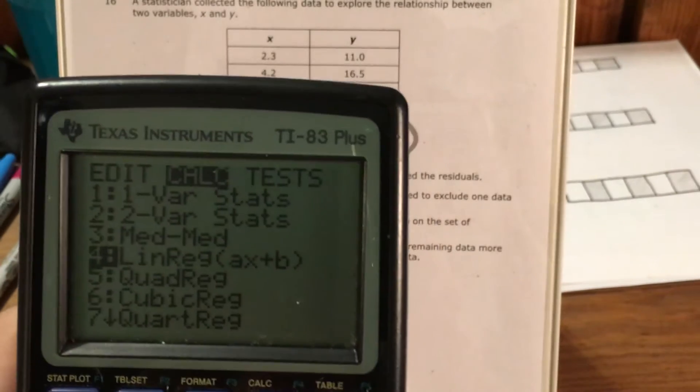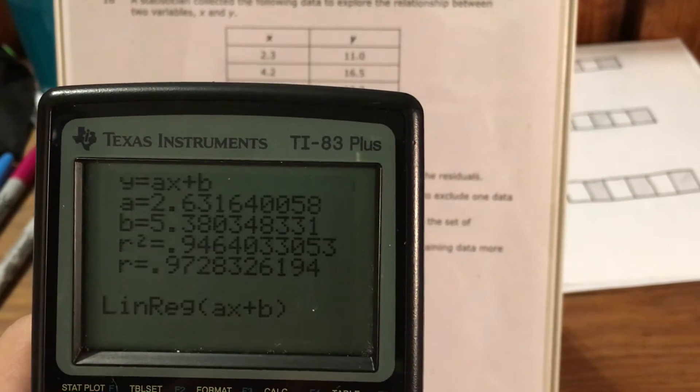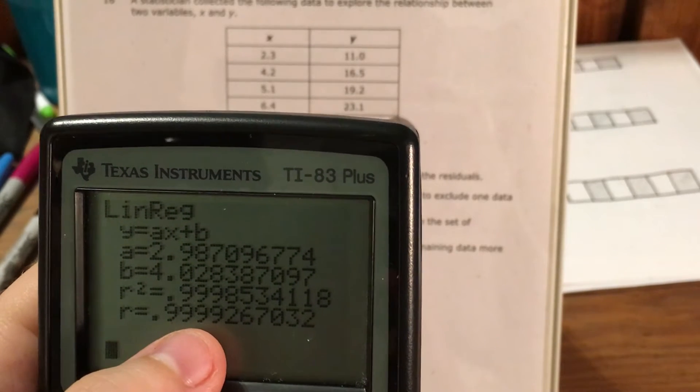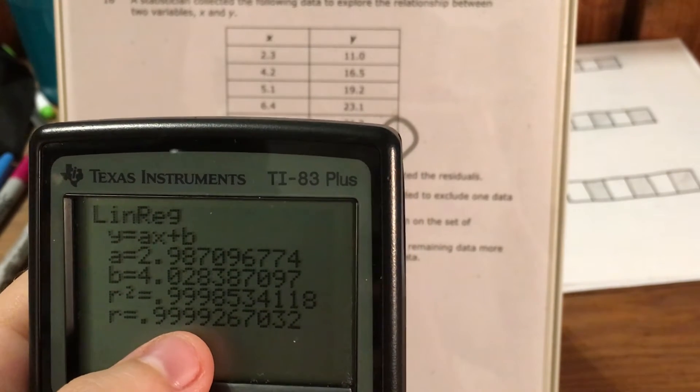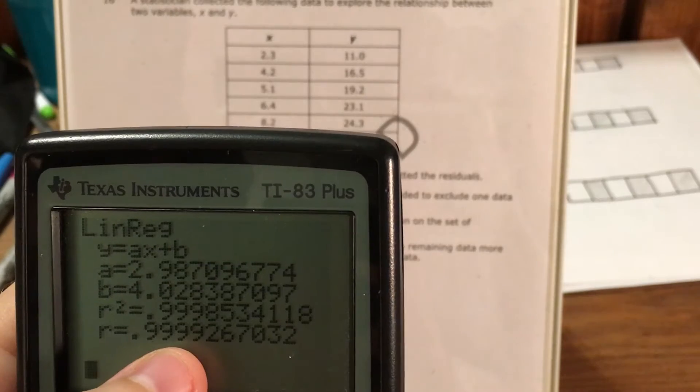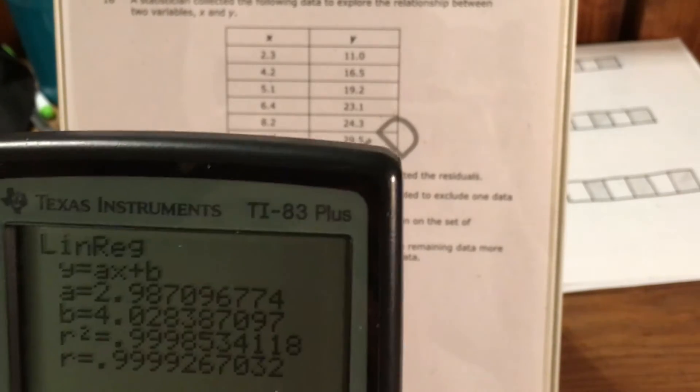Go back to stat calc linear regression again. Okay. Now my R is very, extremely, almost infinitesimally close to one. This has become much stronger since I took out that point.